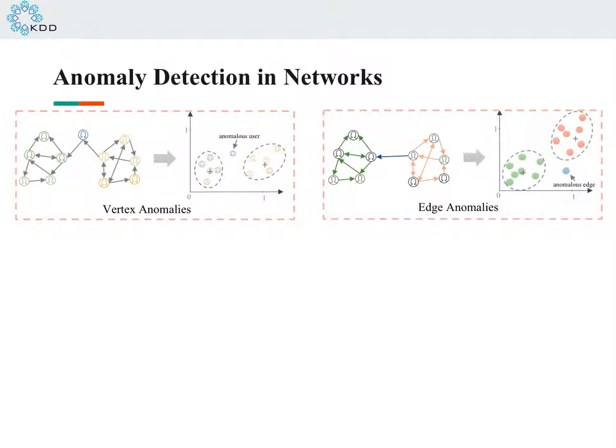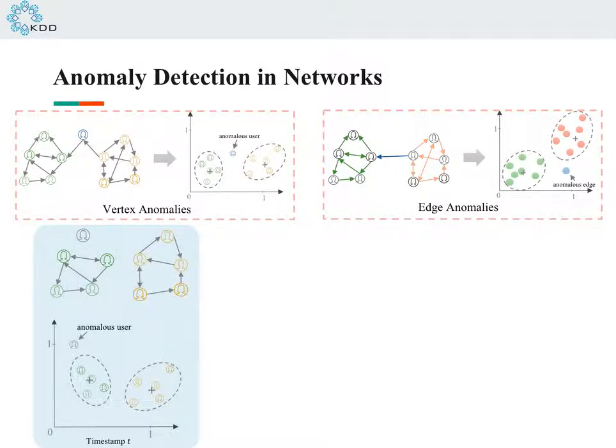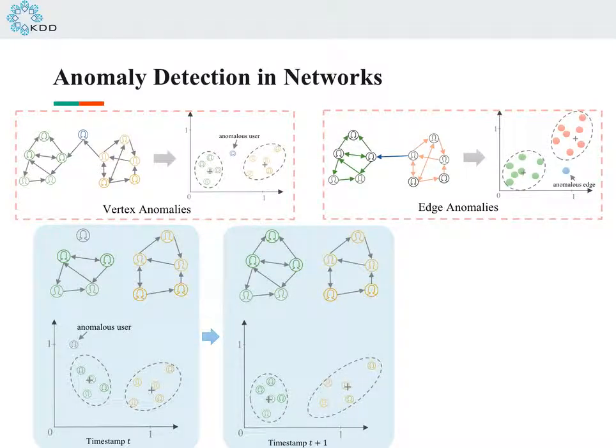Here is another example for edge anomaly detection. However, existing methods for network embedding cannot update the representation dynamically as new vertices or edges keep feeding. So this is a demo of a dynamic case.